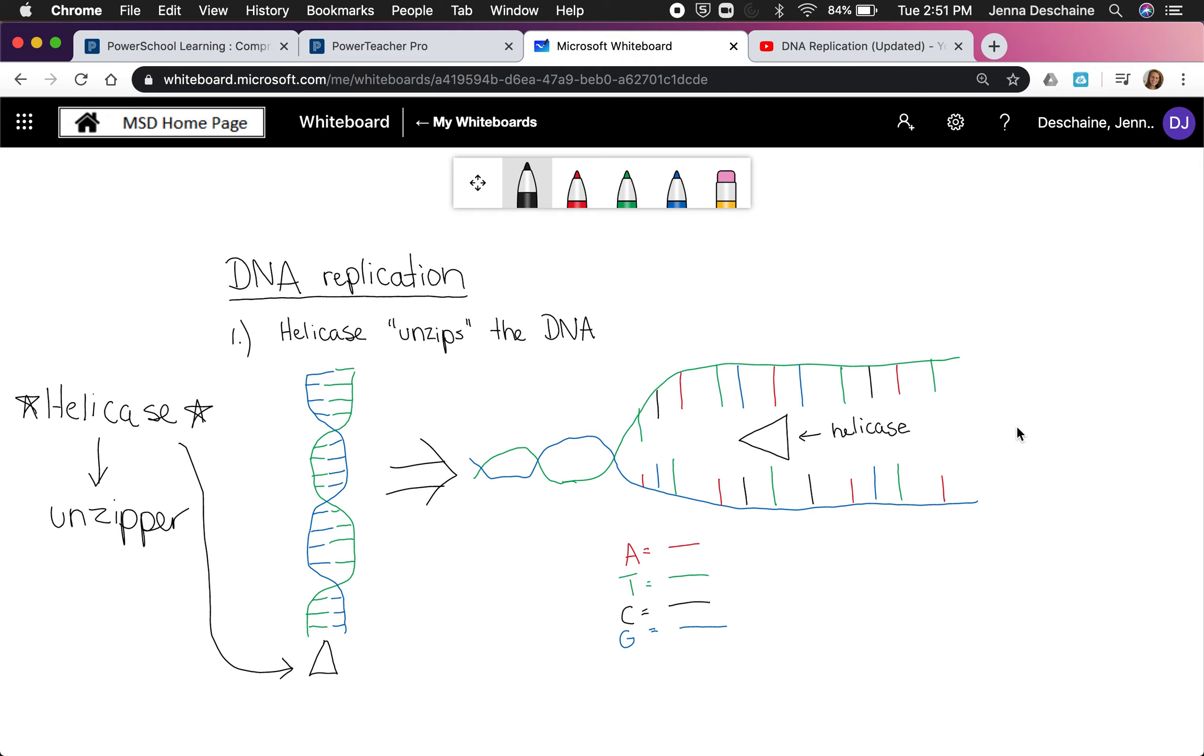It actually ends up looking something like this. Helicase started right around here and made its way over here and starts to unzip the DNA. This is part of DNA that is still held together, and this is the part that is unzipped. I'm actually going to be zooming into this part so I can show you how DNA goes about replicating itself.